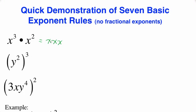If you have x cubed, that's x times x times x. And if you have x squared, that's x times x. So what's the final answer? You have x times itself five times — x to the fifth. Please notice that three plus two is five.